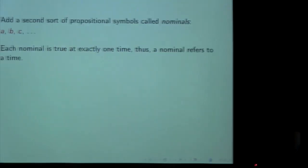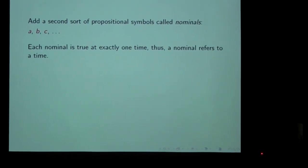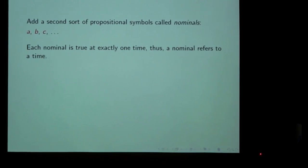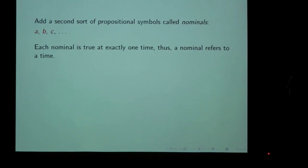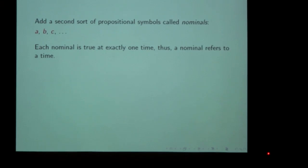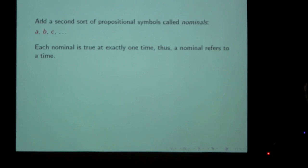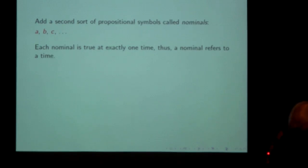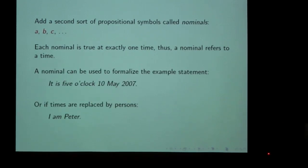Now I'll describe how we extend this modal logic with hybrid logical machinery. We add a second sort of propositional symbols called nominals — A, B, C — and a nominal is true at exactly one time if the points in the model stand for times, or true at exactly one person if they stand for persons, or one place if they stand for places. This is the first piece of hybrid logical machinery.